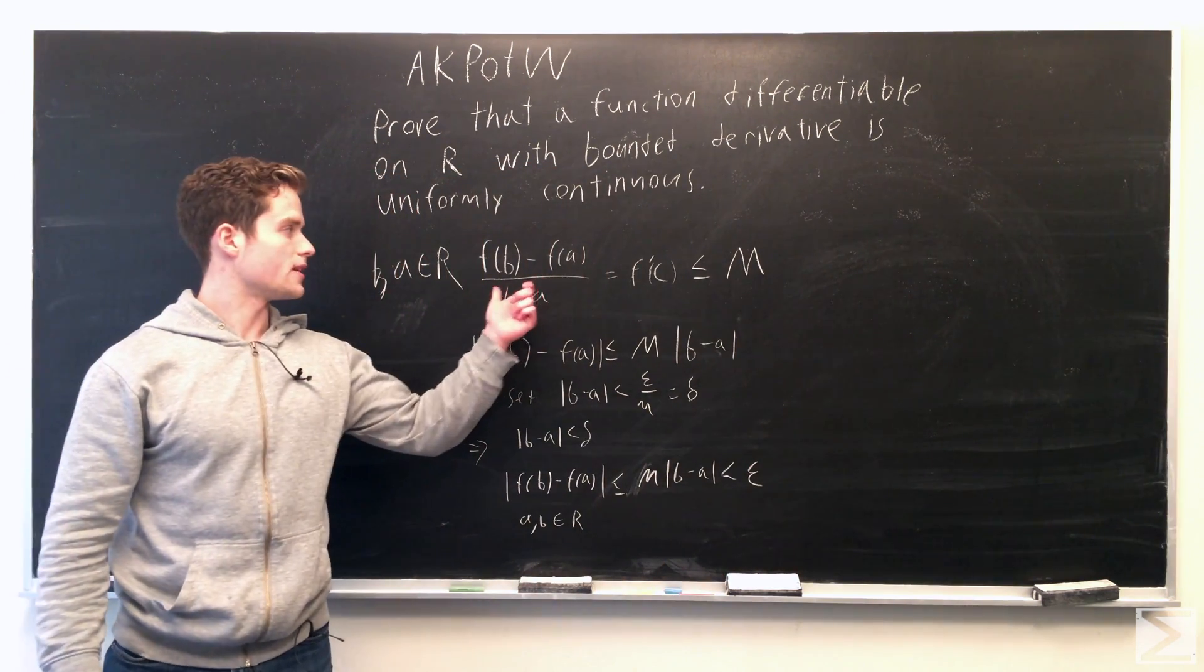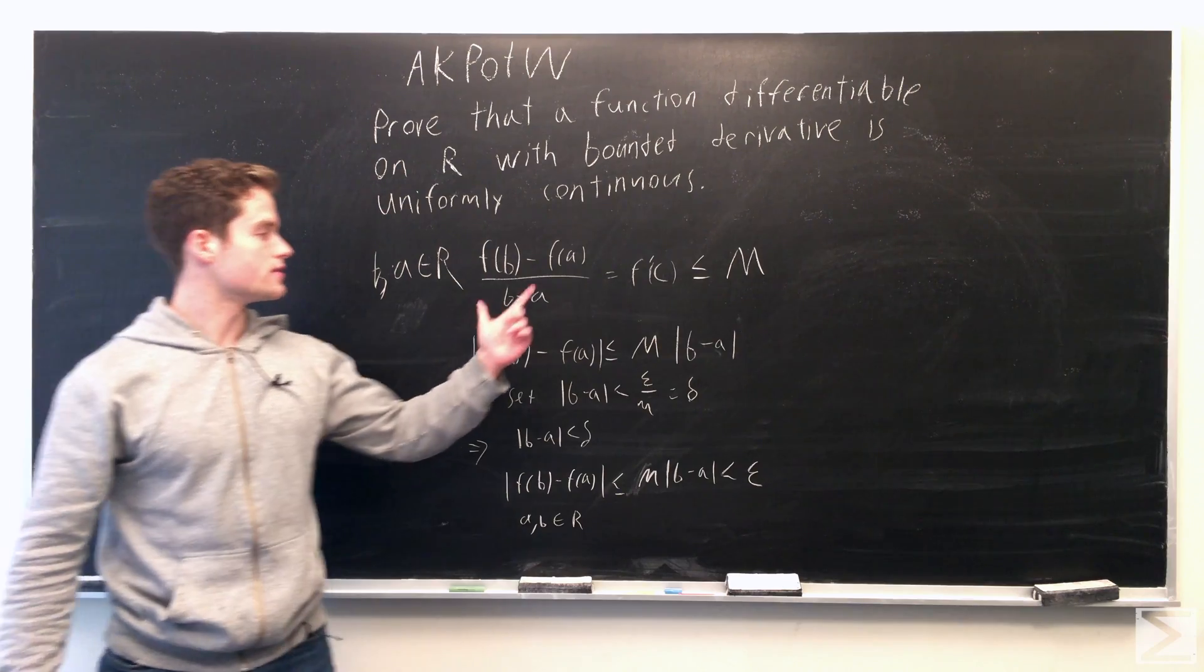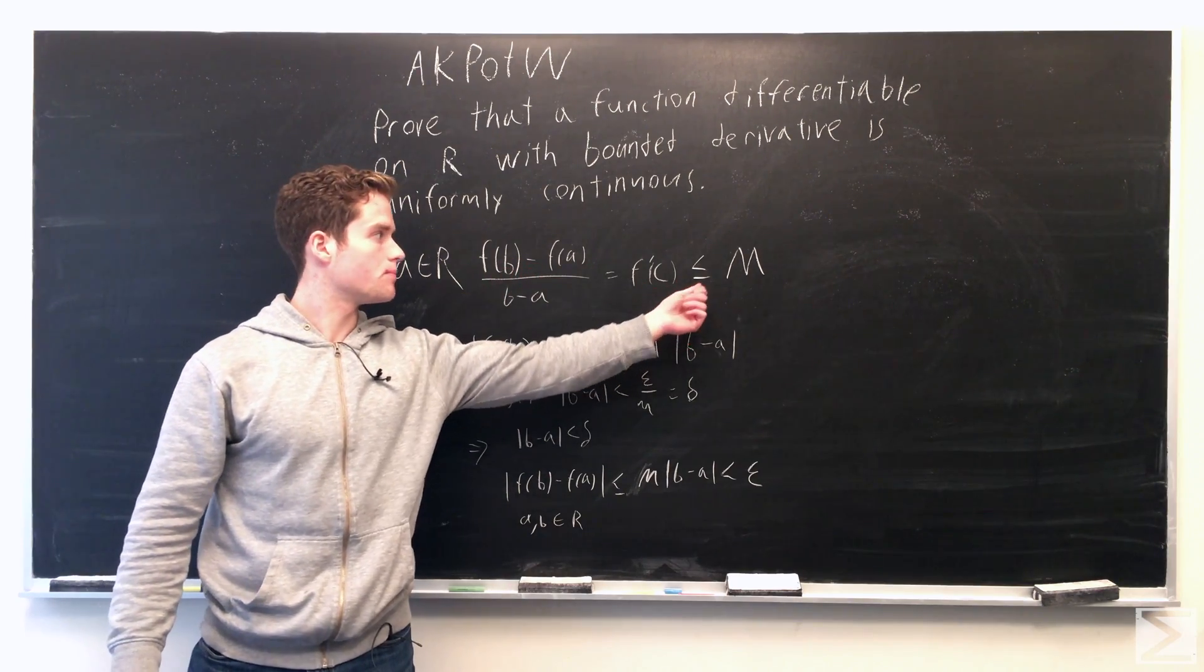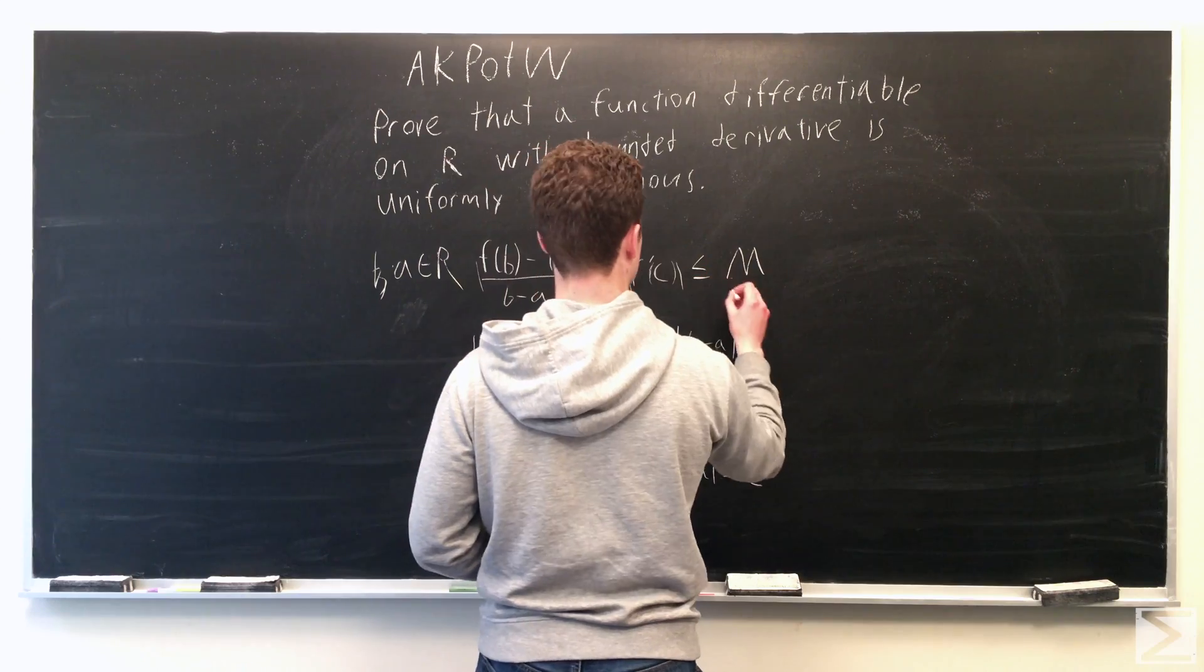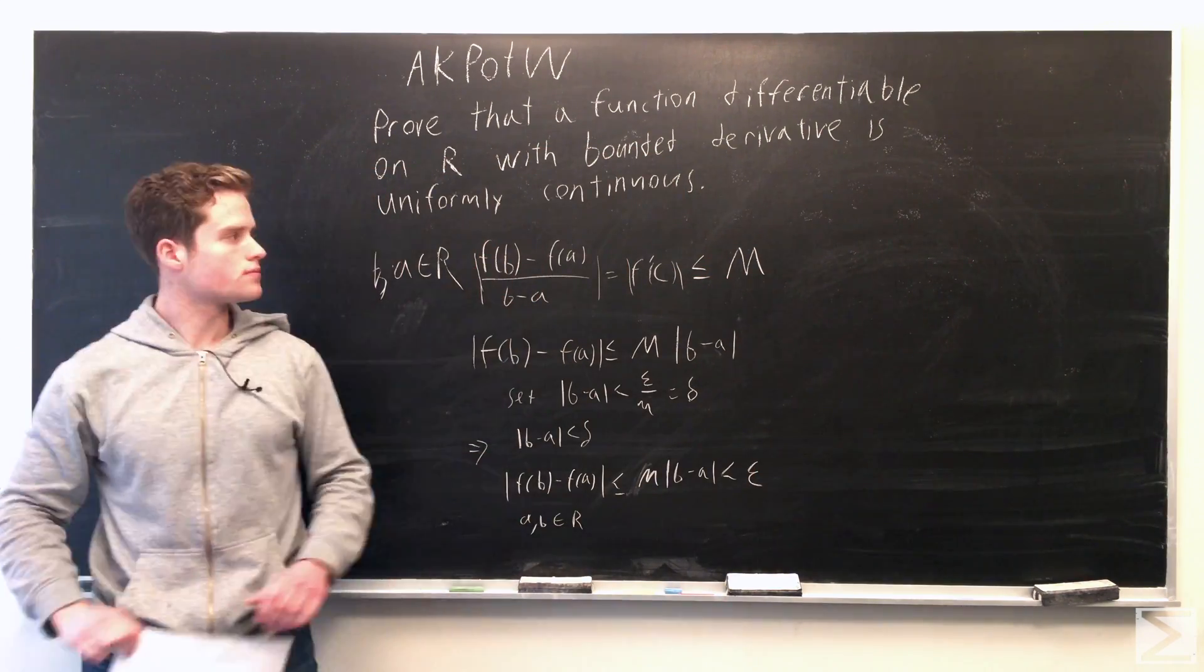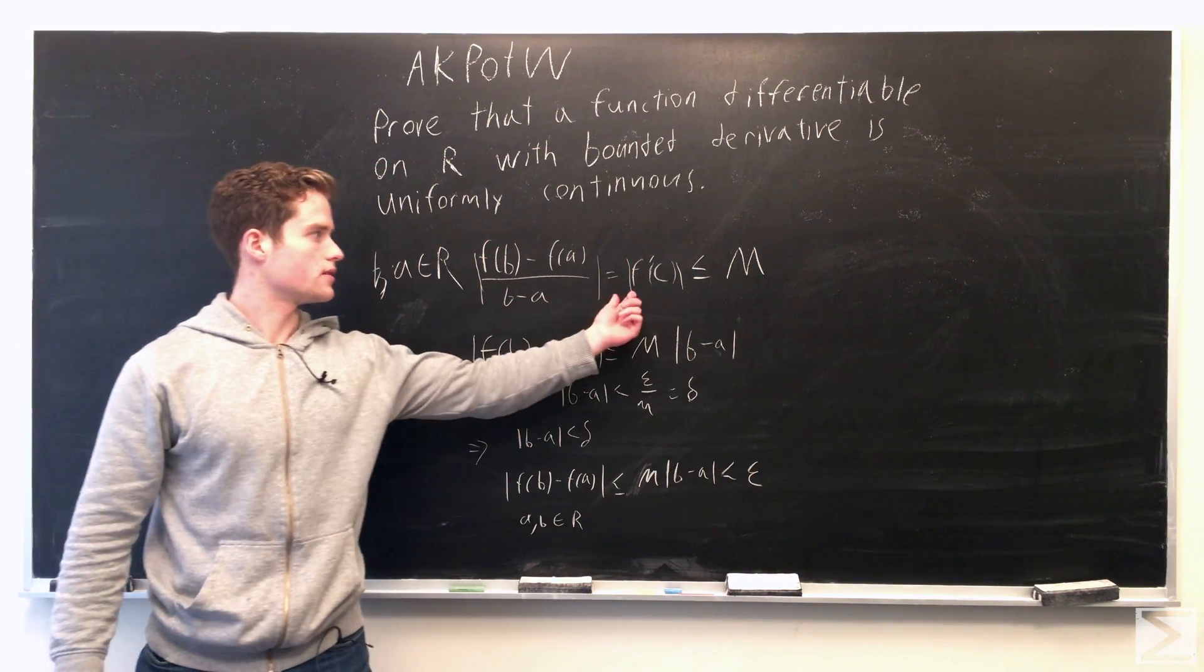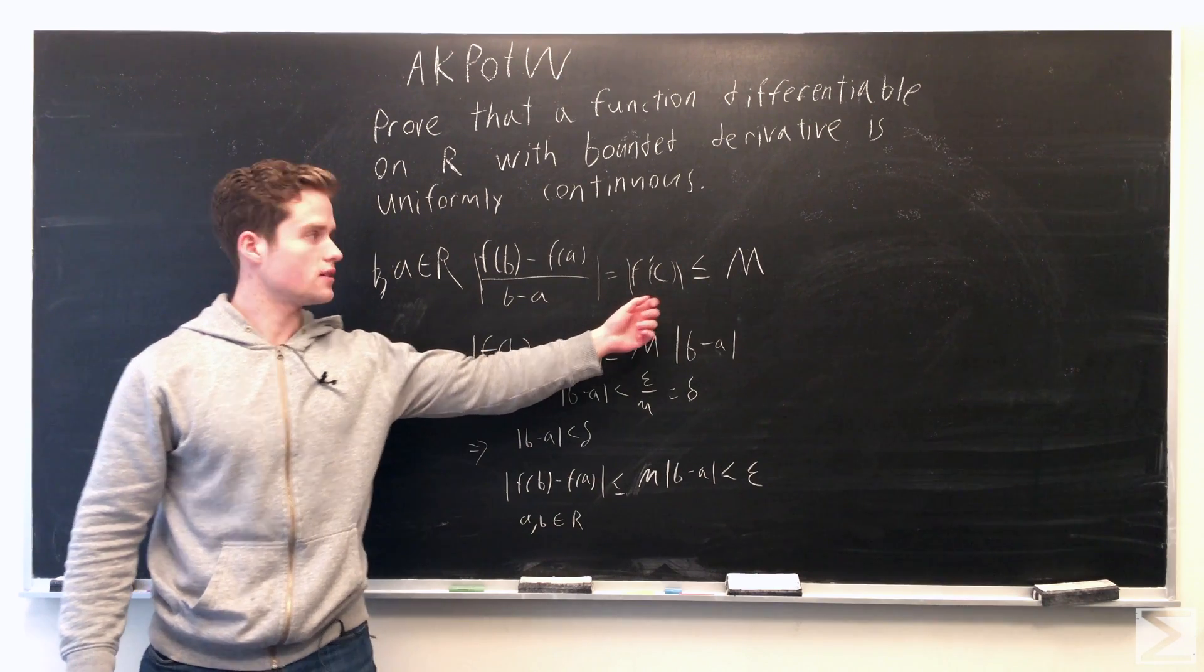So because f of b minus f of a over b minus a is bounded by some number m, the absolute value of this equals the absolute value of f prime of c, which is bounded.